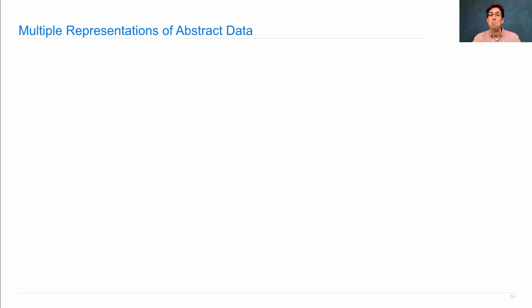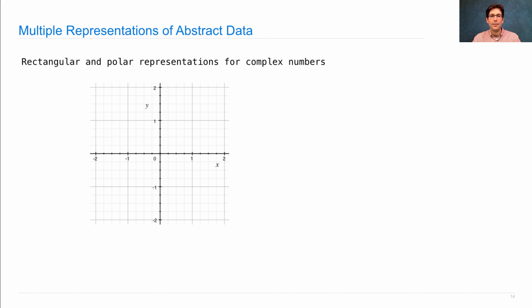And this is a case where we're going to have multiple different representations of the same abstract data type. So for complex numbers, which have both a real and an imaginary component, they get represented in two different ways.